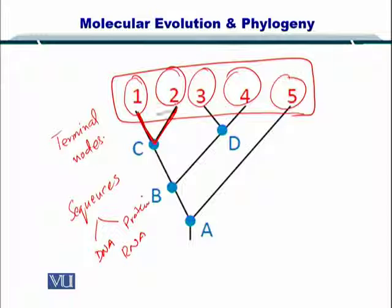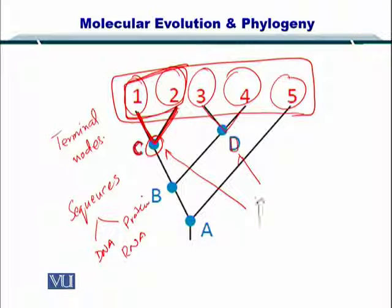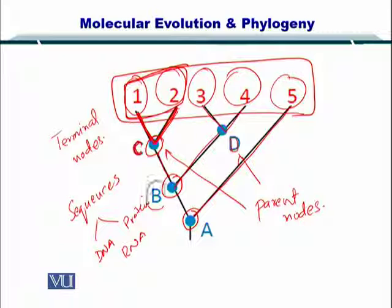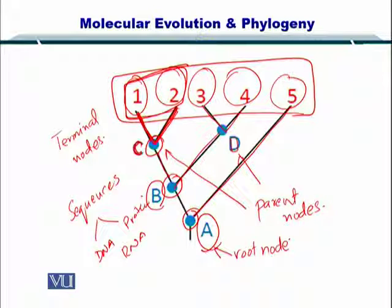In this example, one and two are related, as shown by node C. Three and four are related through their parent node D. These are called parent nodes. Five is related to both of them through the parent node B, and A here is called the root node. This is the basic information that a phylogenetic tree is showing you, and how these are built will be discussed later.